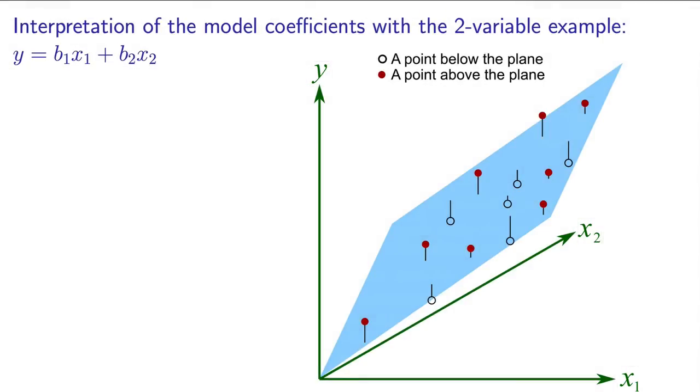That plane will have some points that lie above it, and some points that lie below it, so that the sum of squares of errors is minimized. Any time we make a prediction using this model, that prediction will be from a point on that blue plane, shown here in the diagram.